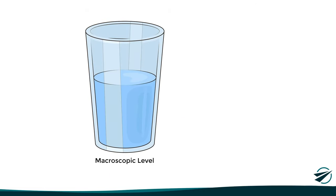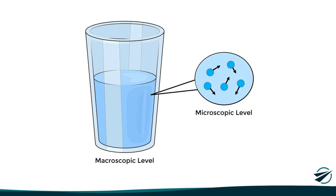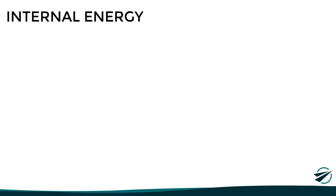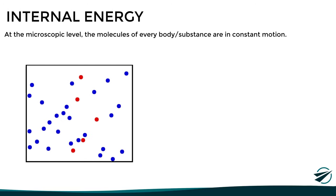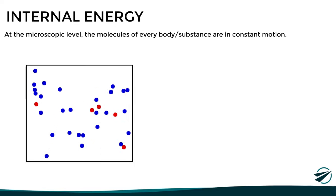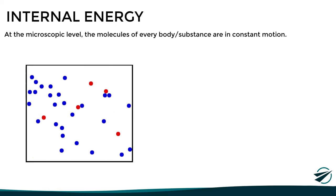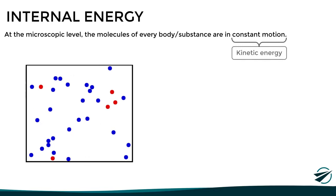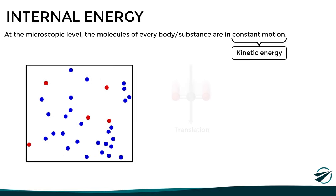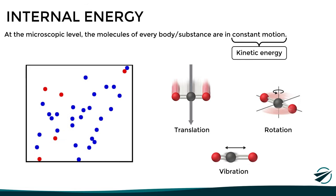Here we have a glass of water at rest, which means that at a macroscopic level, the water does not appear to be moving. However, if we observe water at the microscopic level, we will realize that the water molecules are in constant motion, colliding with each other. This continuous movement of the molecules at the microscopic level is known as internal energy, and it is not only present in water, but in any other body or substance. Energy in the form of movement is known as kinetic energy, which is expressed by means of the translation, rotation, or vibration of the molecules.